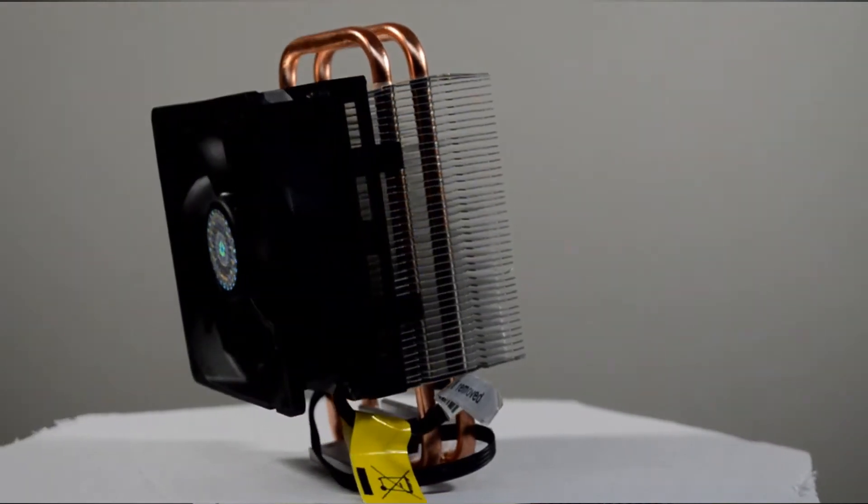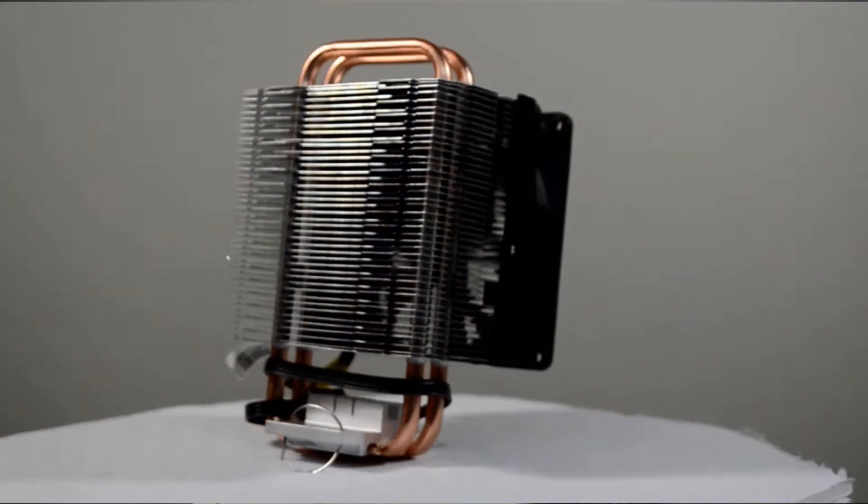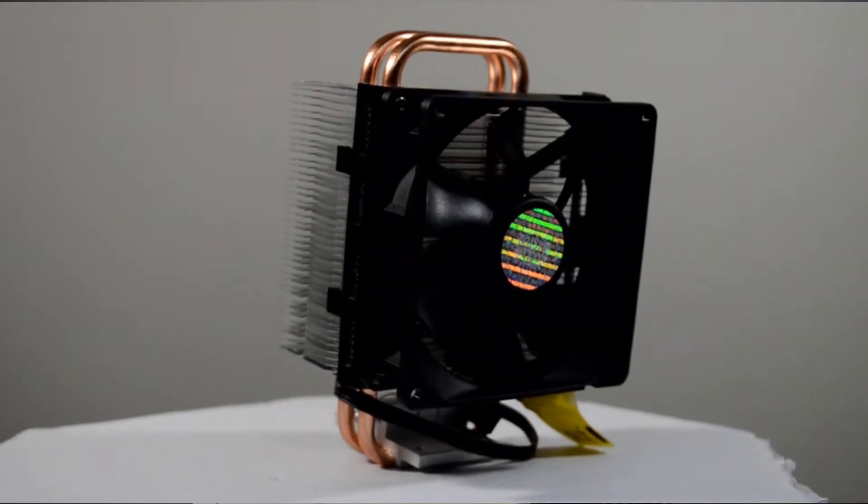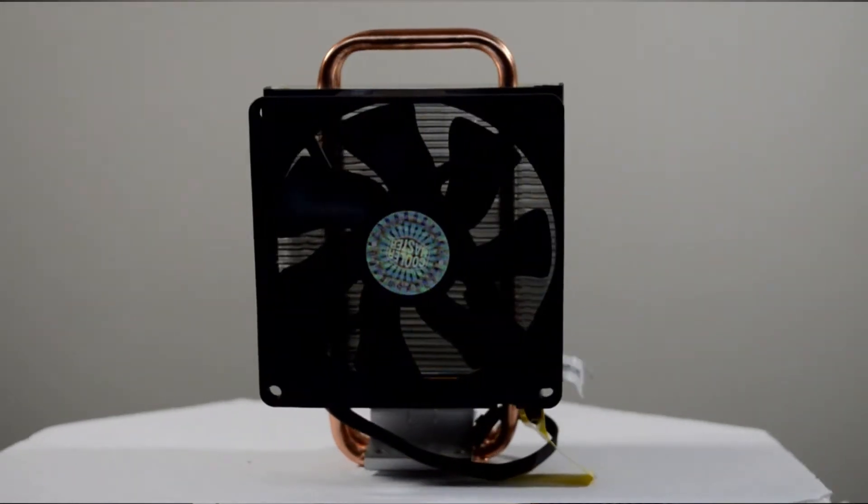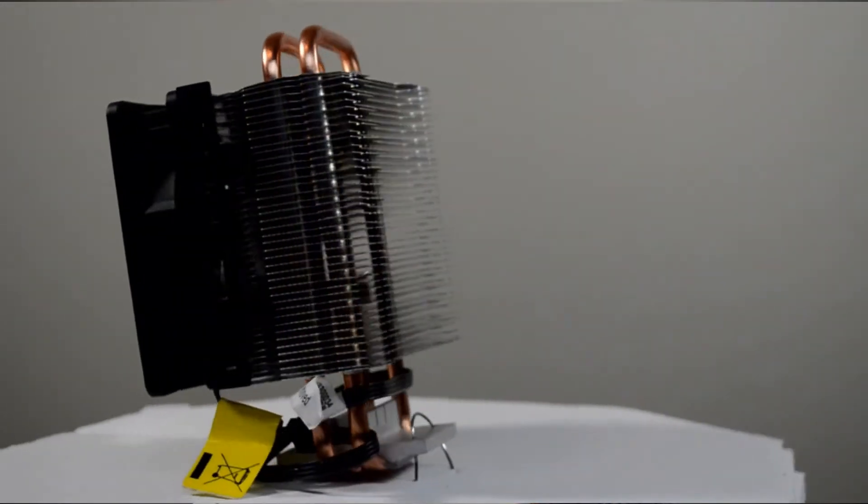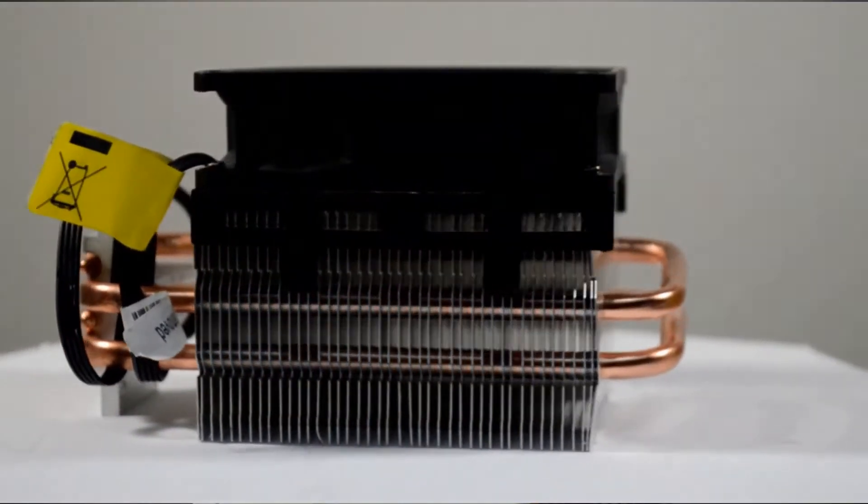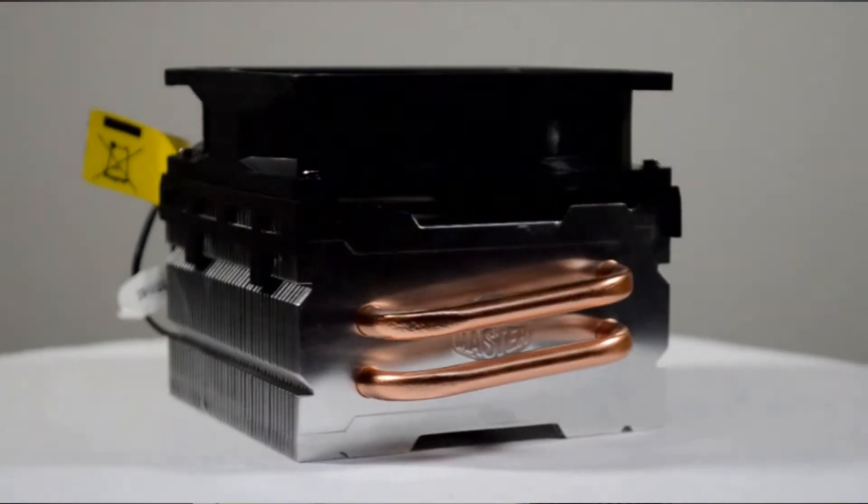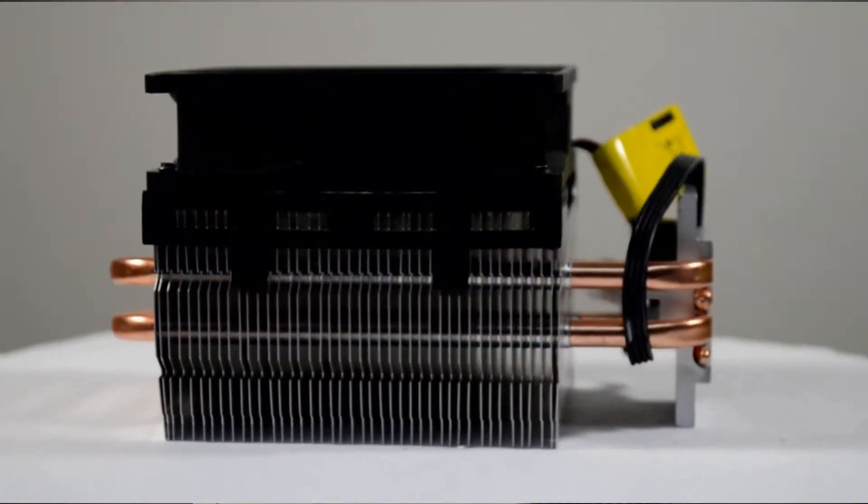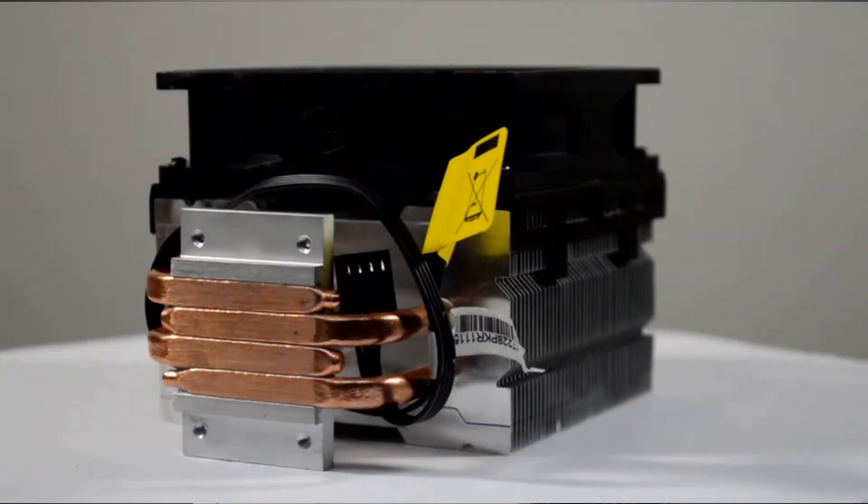The fan that comes with it is a 92 millimeter fan and it can spin up all the way to 2800 RPM. Theoretically, the size on the cooler is 140 millimeters high by 90 millimeters wide and 76 millimeters deep. What that means is that clearance issues should not be there for most motherboards unless you're going with micro ATX or mini ITX, but that depends on the spacing and which socket you're dealing with.